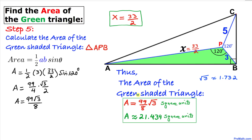The area of this green triangle is 99√3/8 square units, which is approximately equal to 21.434 square units. Thanks for watching, and please don't forget to subscribe to my channel for more exciting videos. Bye!